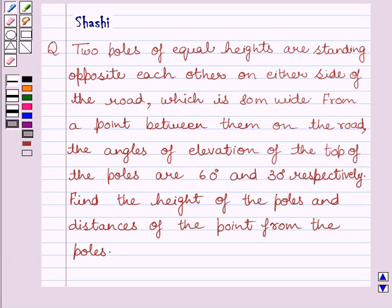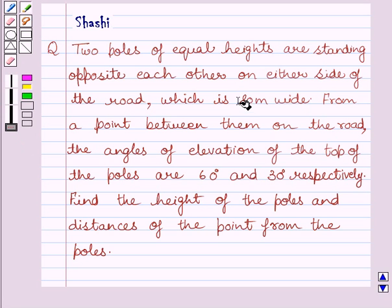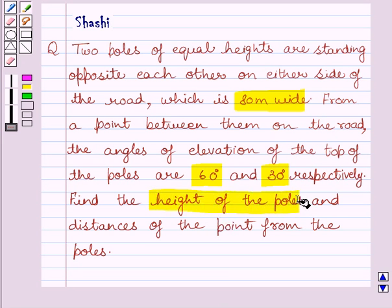Hi and welcome to the session. Let us discuss the following question. Two poles of equal heights are standing opposite each other on either side of the road, which is 80 meters wide. From the point between them on the road, the angles of elevation of the top of the poles are 60 degrees and 30 degrees respectively. Find the height of the poles and the distances of the point from the poles.